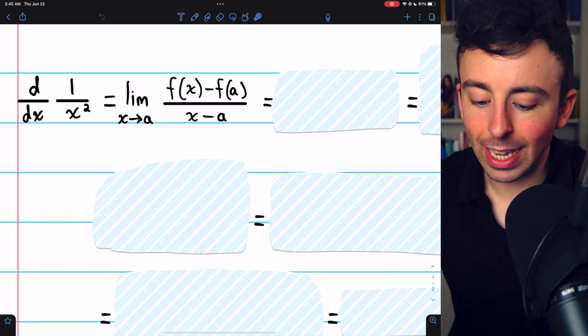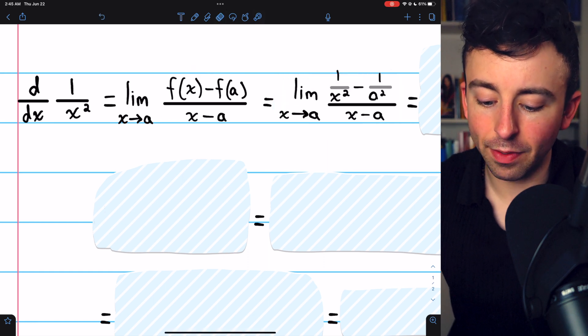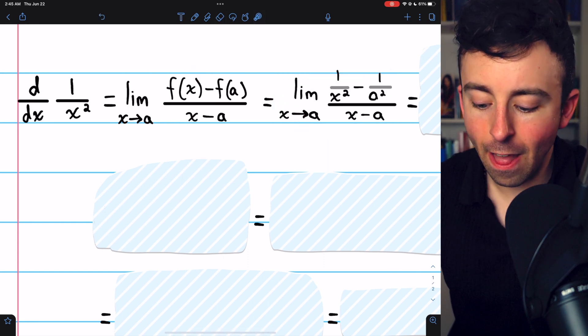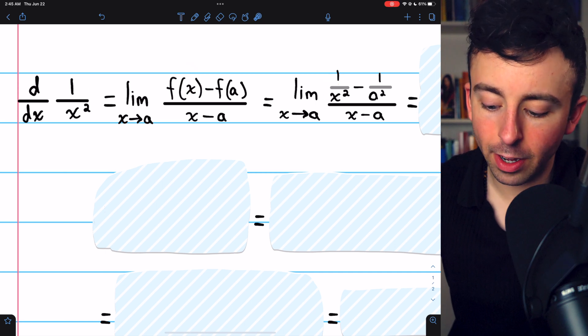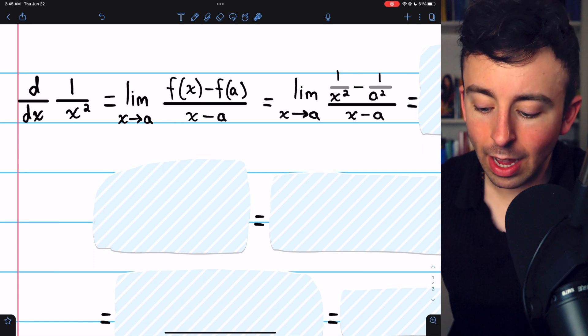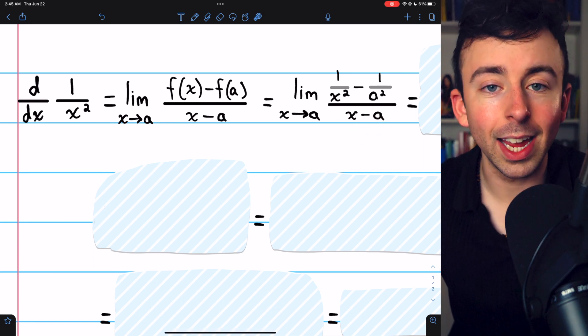So we'll begin by just plugging in our pieces. We have the limit as x approaches a of f of x, which is 1 over x squared, minus f of a, which is 1 over a squared. And we have x minus a in the denominator.